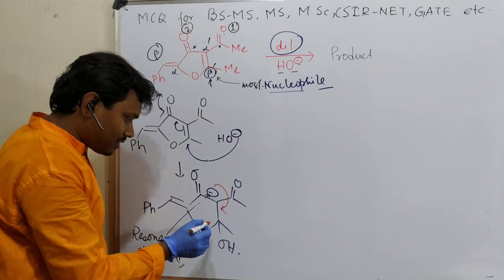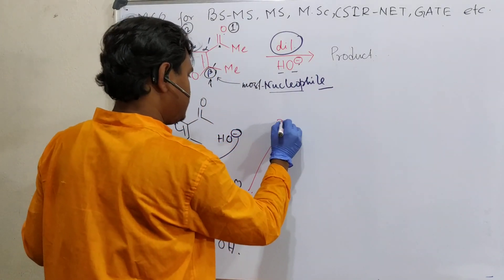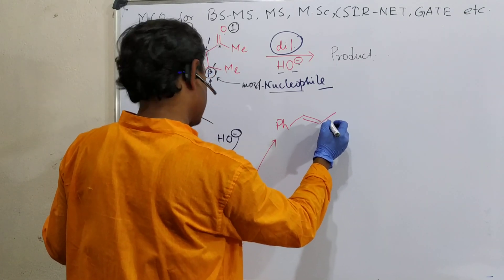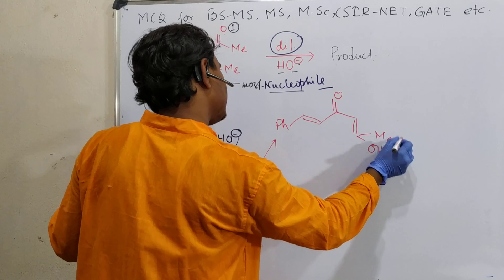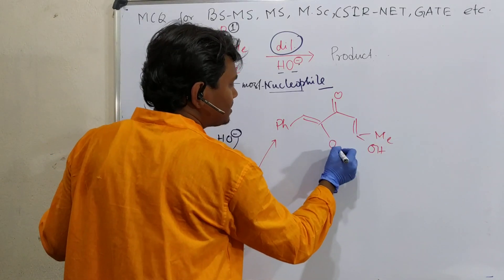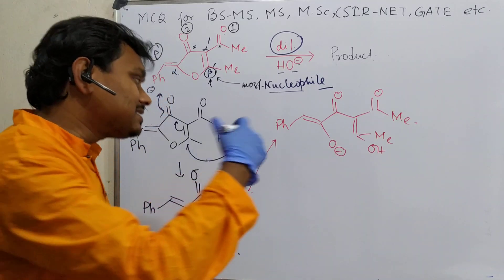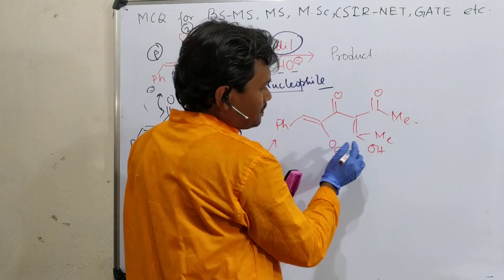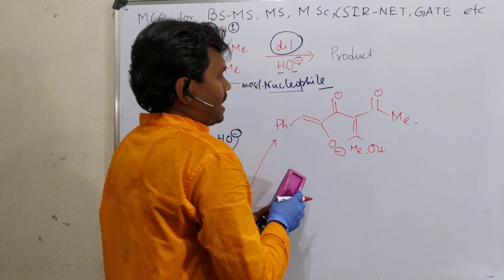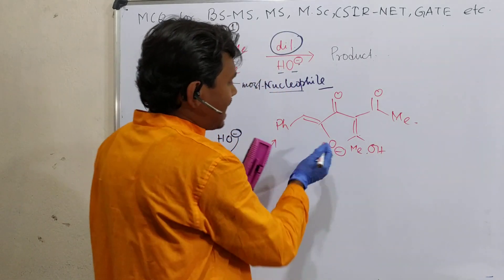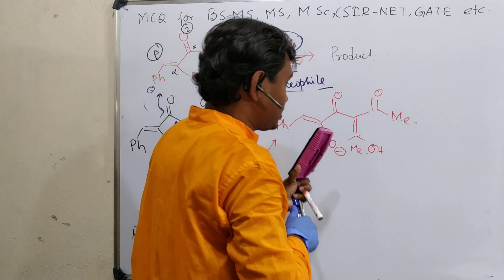In the next stage, one OH can leave and then a product results. Now in second stage you can write it in this way. This is the methyl. The medium is alkaline. And this is an enol. So ultimately it can undergo tautomerization. Two tautomerizations are possible - one from this side and one from the other side.